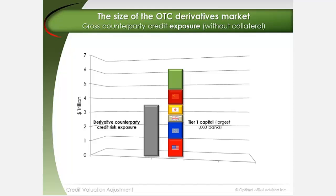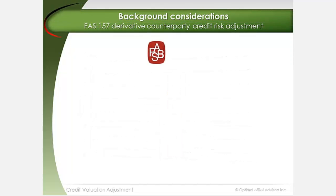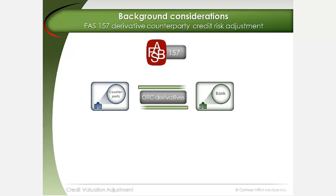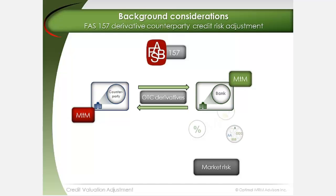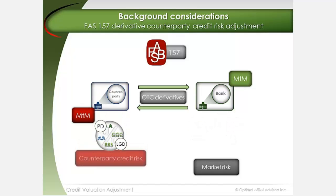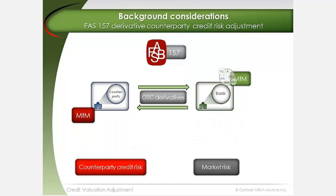Although there are no reported numbers on collateral offsets to this aggregate exposure, the inclusion of collateral would be expected to act as an important buffer against this risk. The introduction of FAS 157 subsequently required banks and other originators of derivatives to adjust the value of their mark-to-market exposure by the risk of counterparty credit default. This adjustment is referred to as credit valuation adjustment, or CVA.